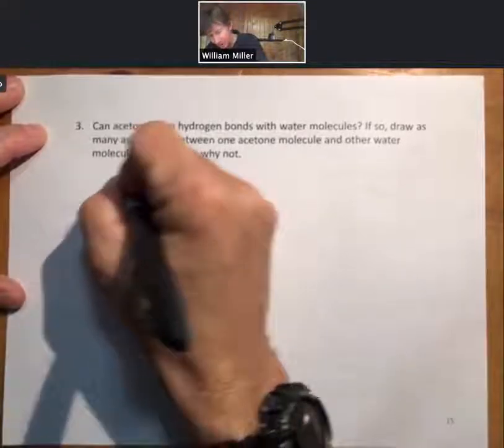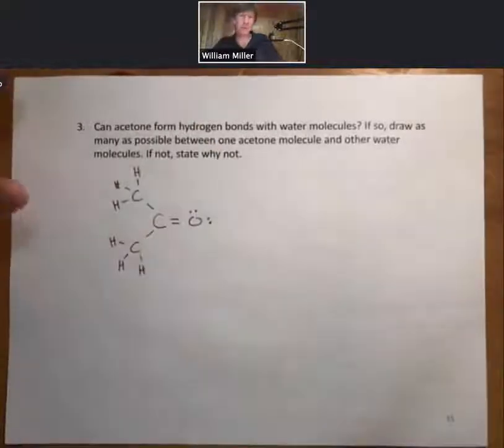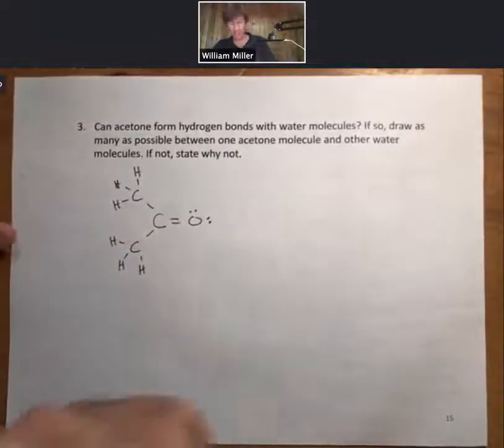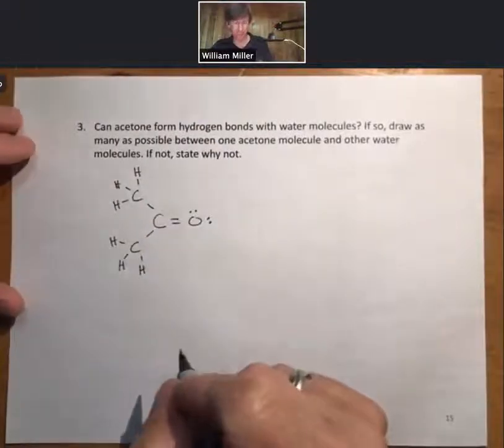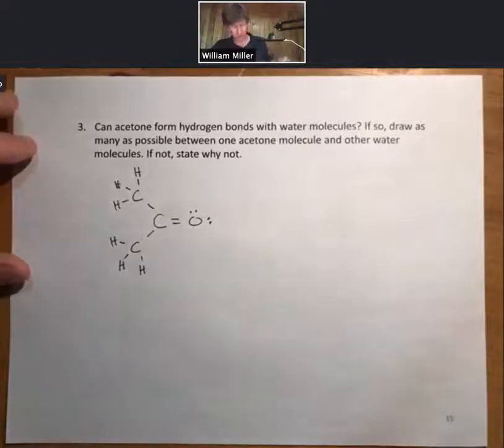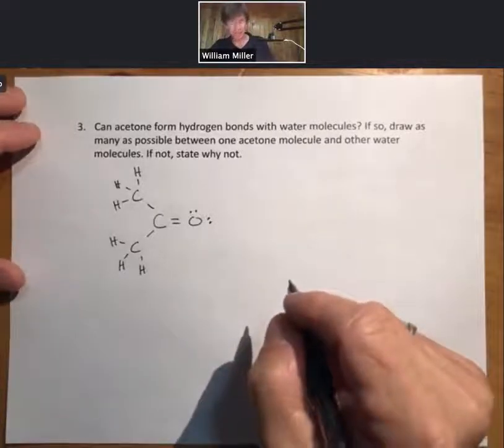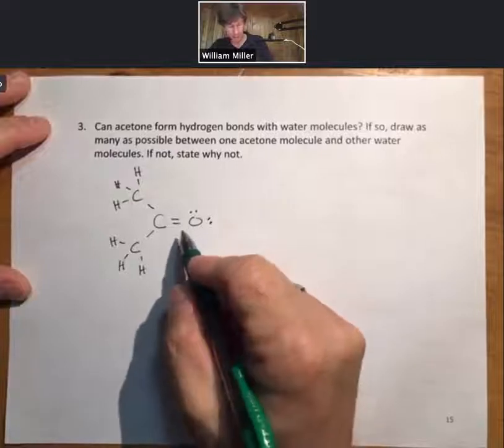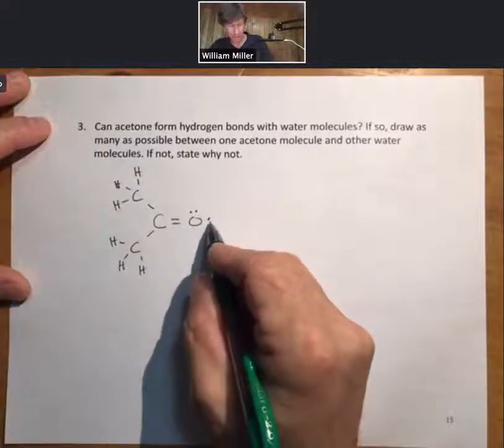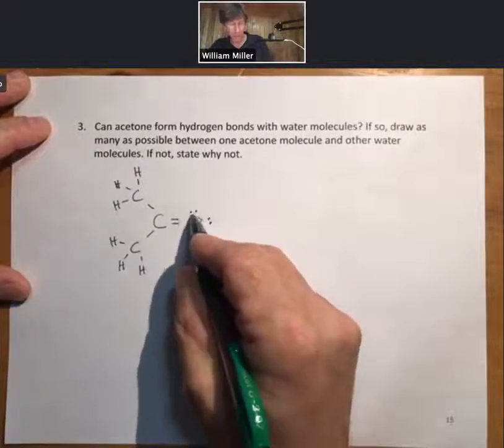And on homework or an exam, you'd probably be given this copy and then asked to draw hydrogen bonding to it. So in this particular case, we have acetone with an oxygen with two pairs of electrons.